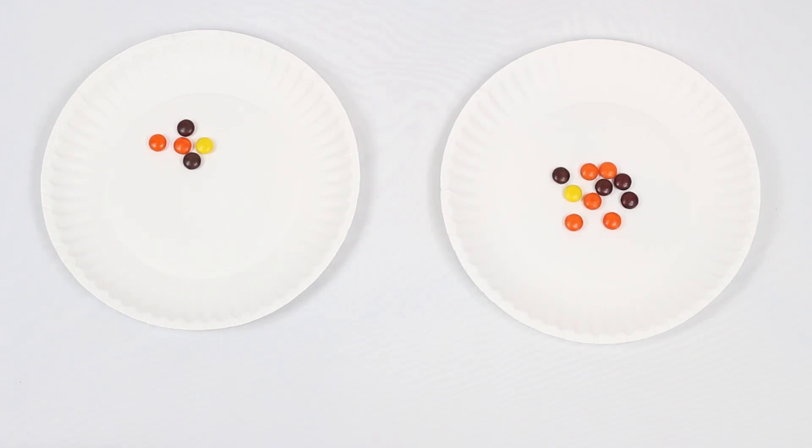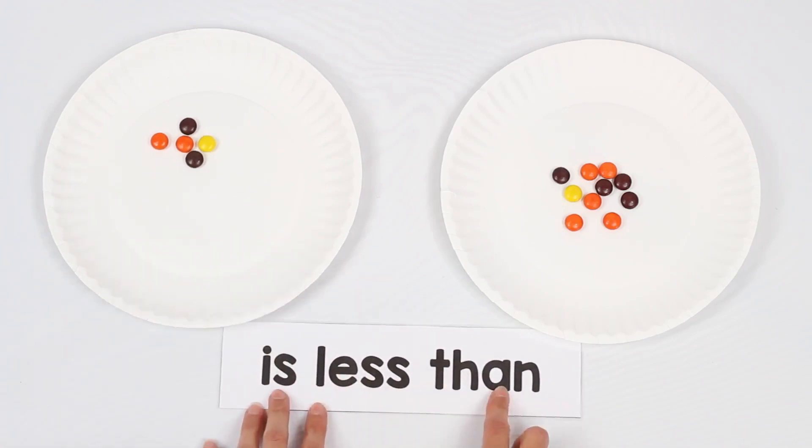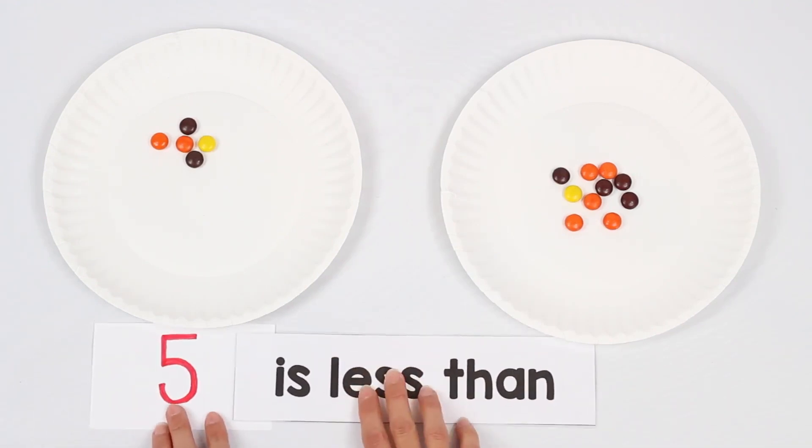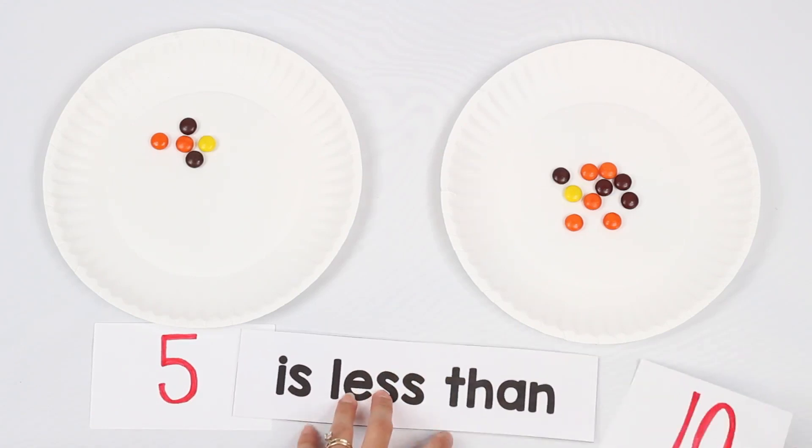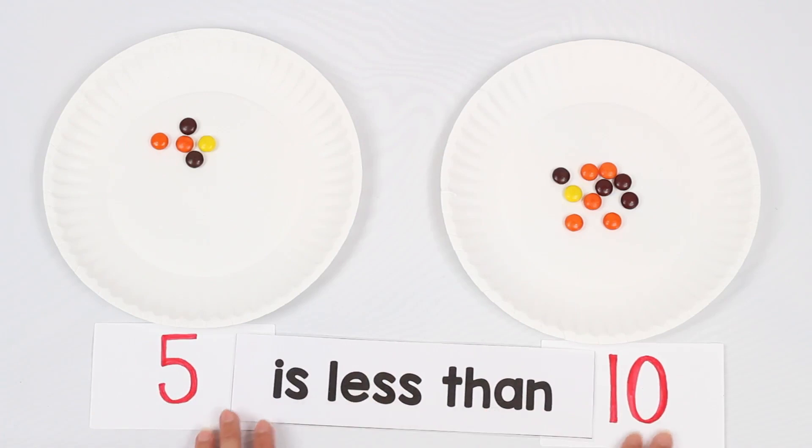Again, you can ask the student which plate they would want the candy from. They're going to say probably this time from the right. Why? Because the amount of candy on this plate is less than the amount of candy on the other plate. You can count to find out if you were correct. And we see that the amount on the left is five. The amount on the right is 10.